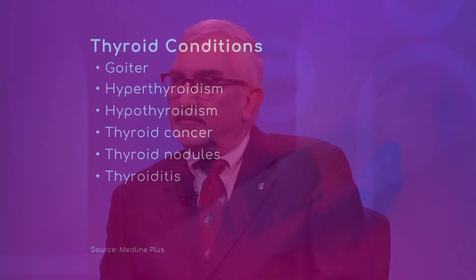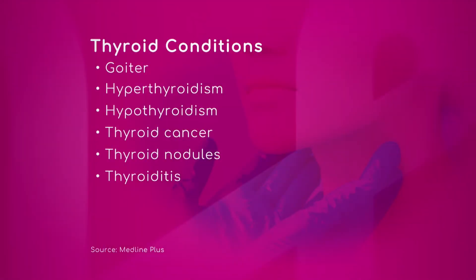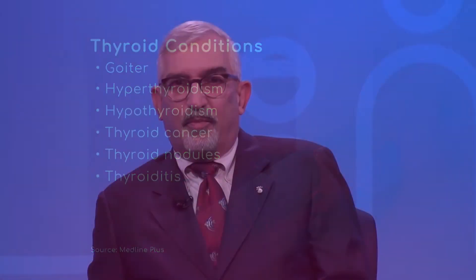Let's look at the effects of thyroid cancer next. Thyroid cancer will not have any abnormalities in thyroid hormone production. This is an anatomic problem — meaning a tumor or nodule within the thyroid gland that has transformed into cancerous cells.